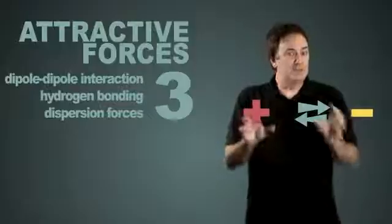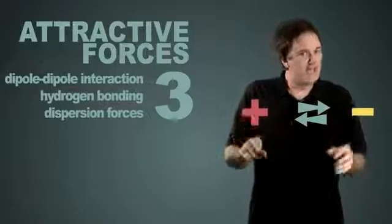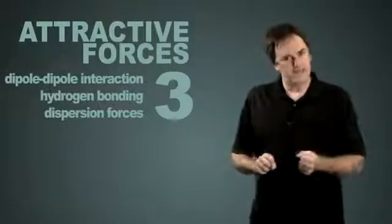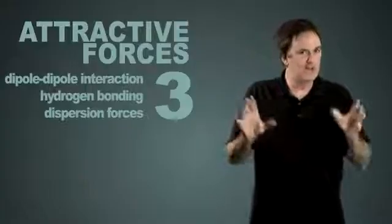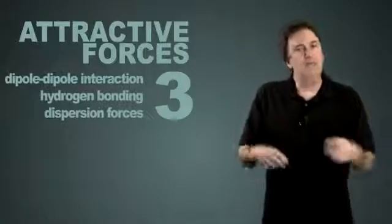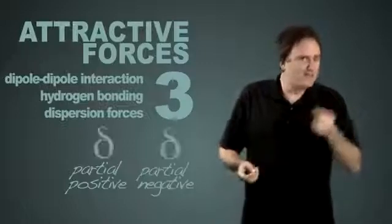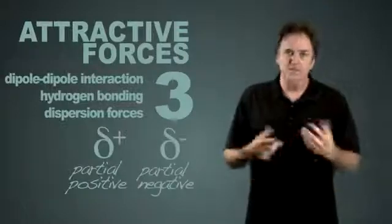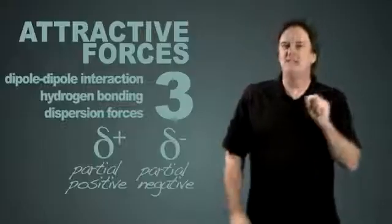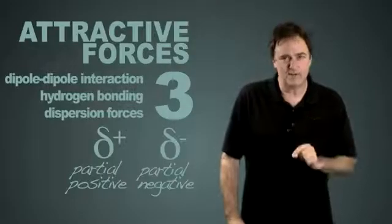Most molecules, being neutral species, do not have full positives and full negatives on them. That tends to be the world of ionic molecules. So we're constantly writing partial positive and partial negative. We even have the way we symbolize it on paper, which you should be used to as these partial positive and partial negative charges.